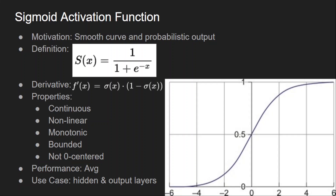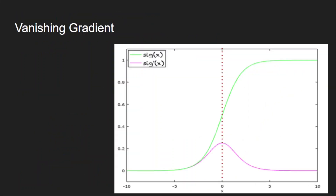Sigmoid has one problem which is called vanishing gradient. Because of the saturation in the curve on both sides, the derivative almost becomes negligible — it keeps getting smaller and smaller. Because of this, the training gets stagnated because the weight updates don't happen.